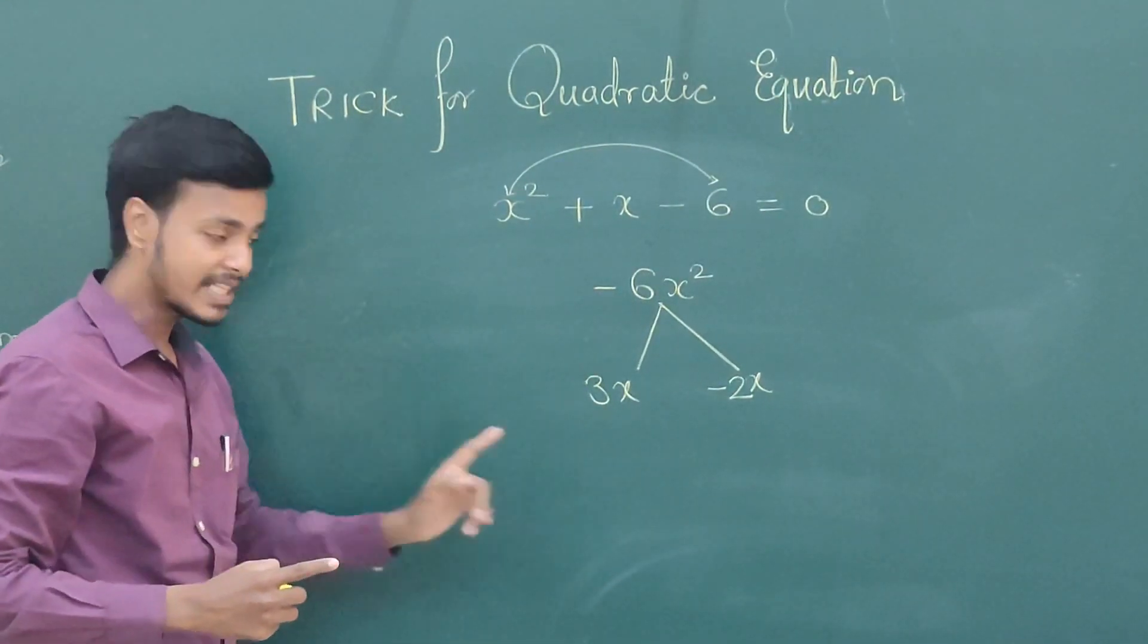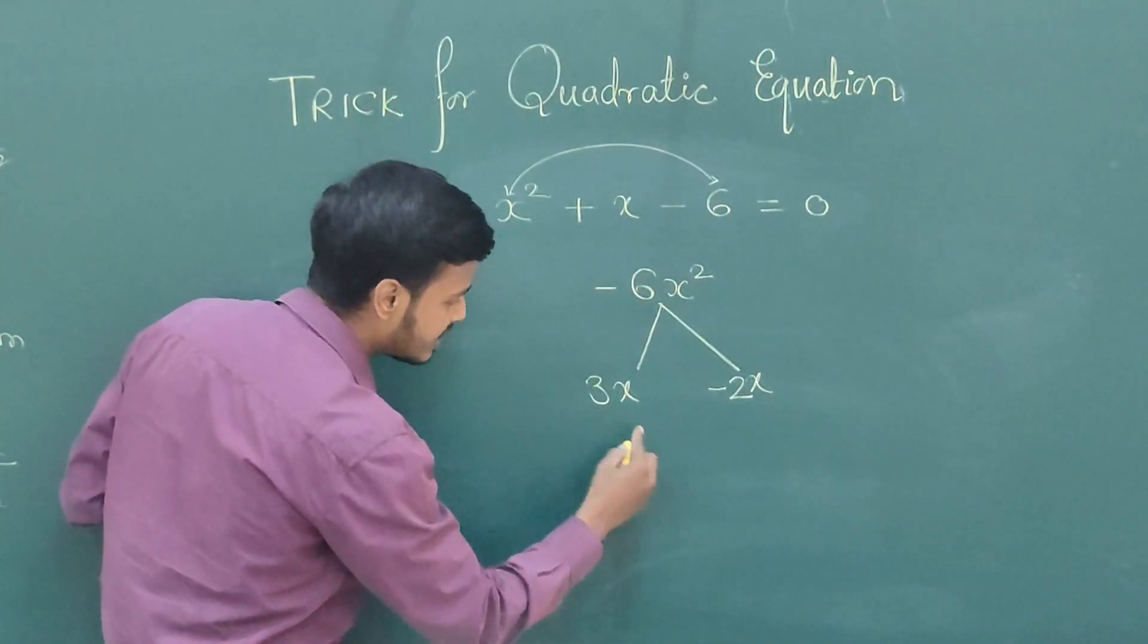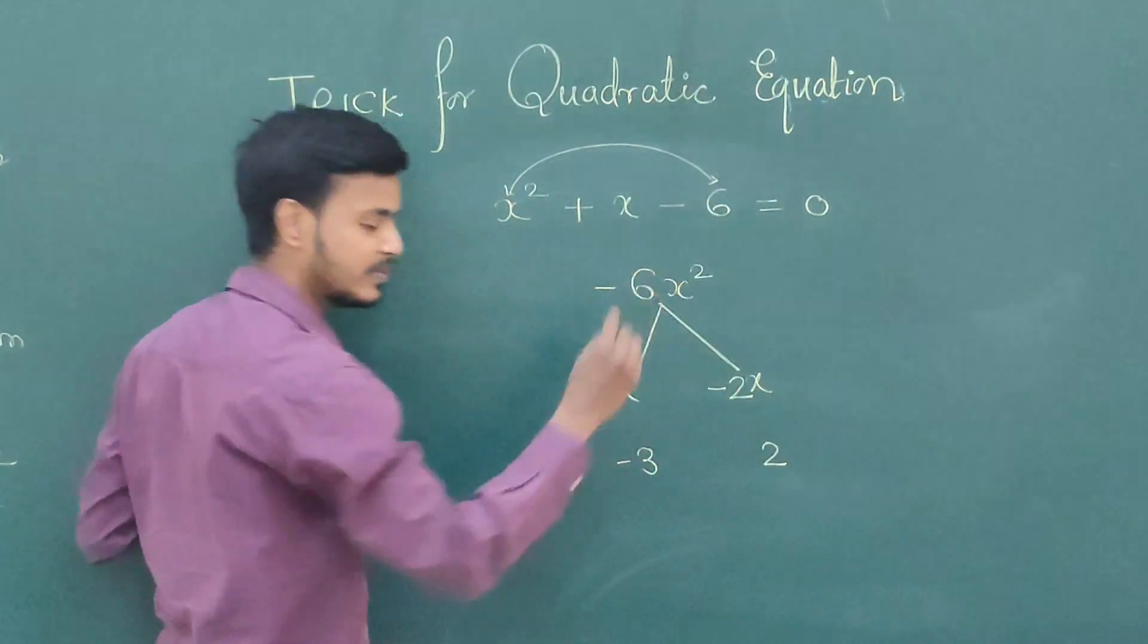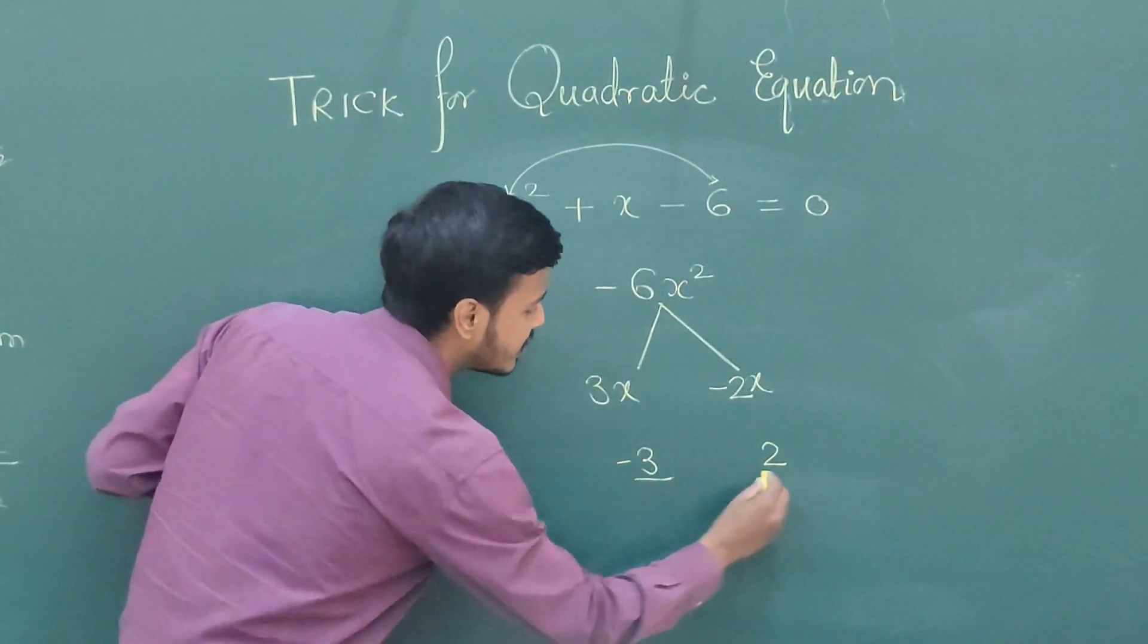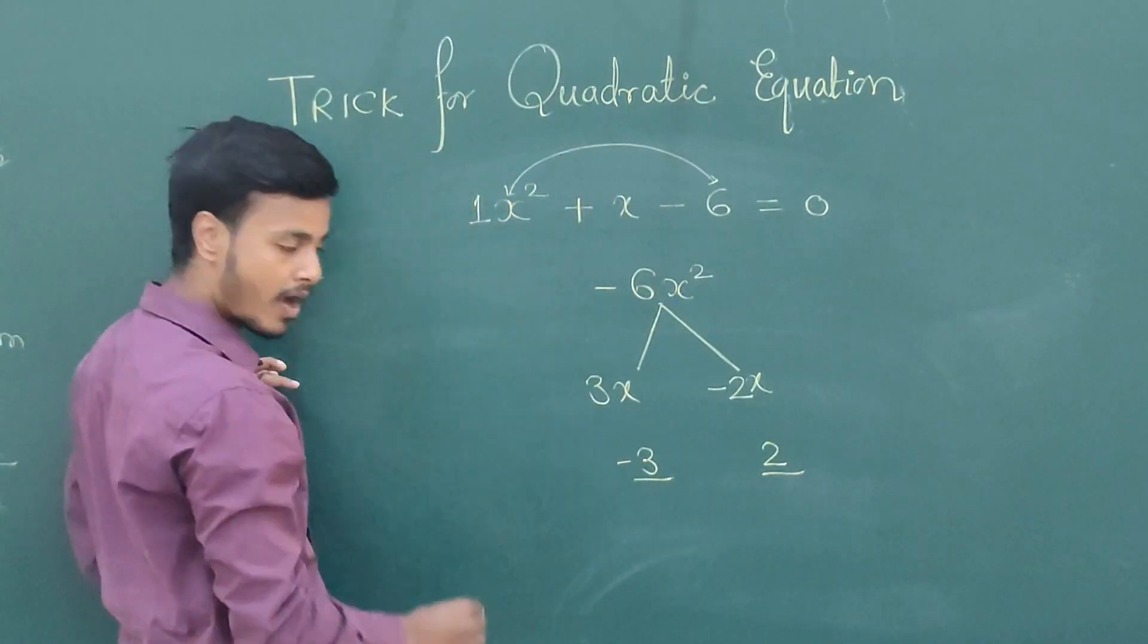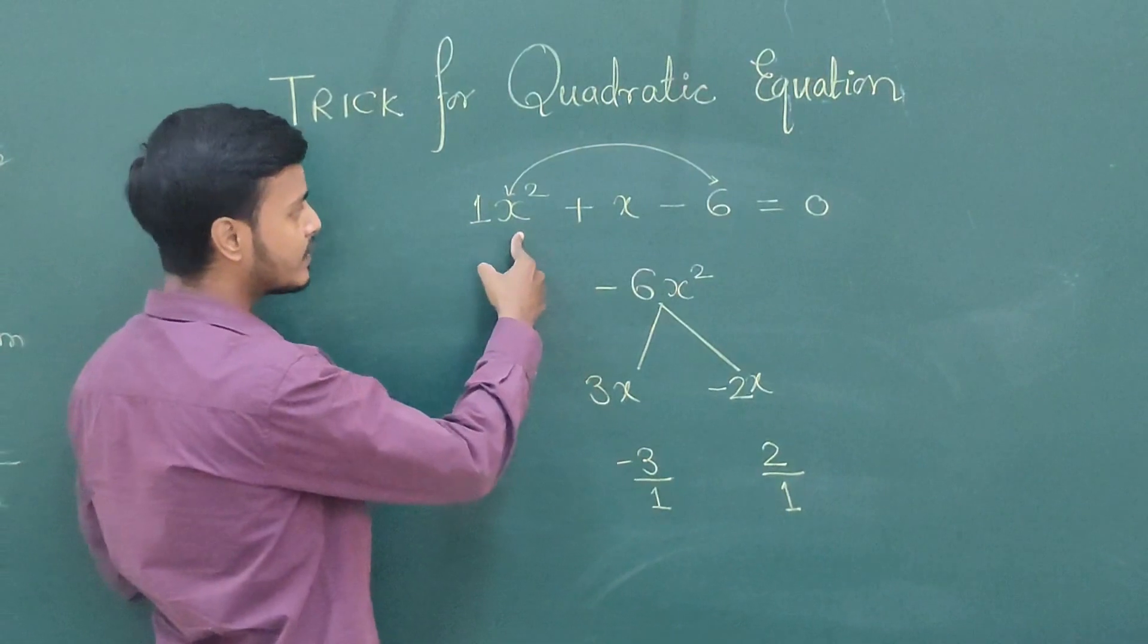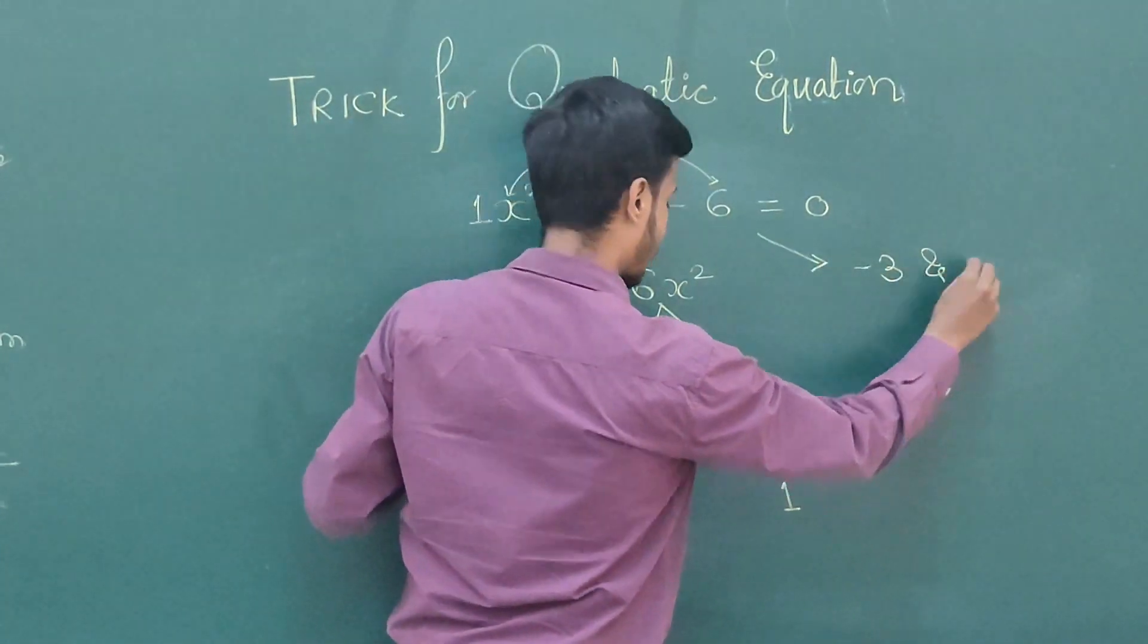Now how to get the roots? Here comes the trick. Give minus sign to these numbers. So 3 becomes minus 3, this minus 2 becomes plus 2. Now divide by the coefficient of x squared. What is the coefficient of x squared? It's 1. So minus 3 by 1 and 2 by 1. The roots of this equation are minus 3 and 2.